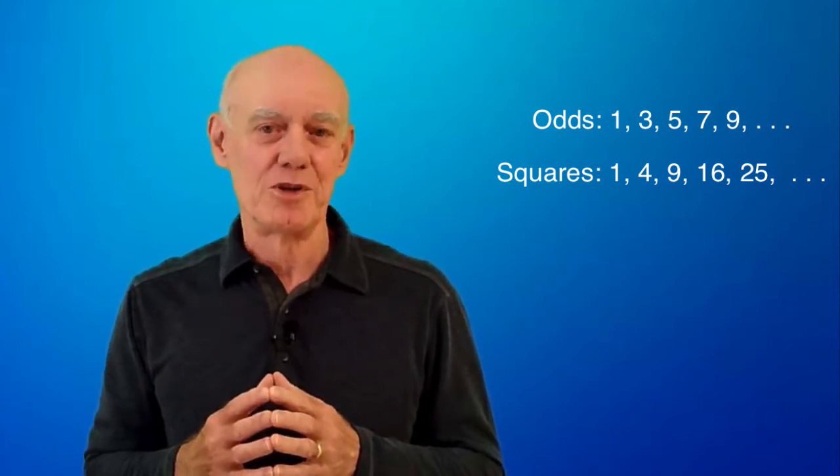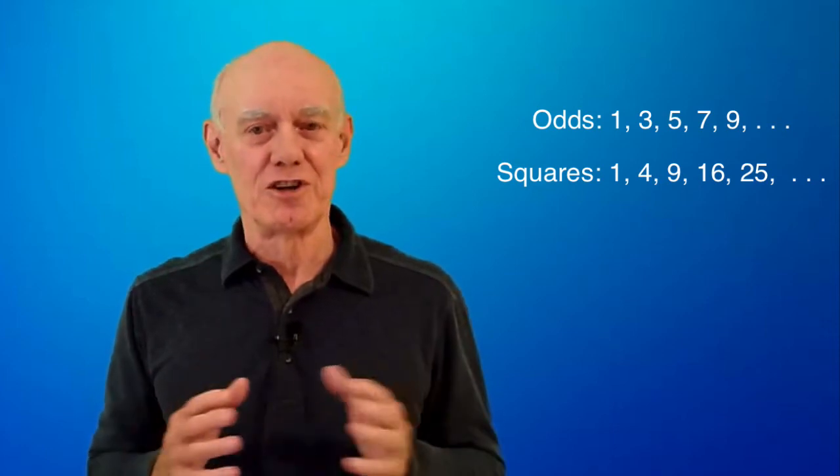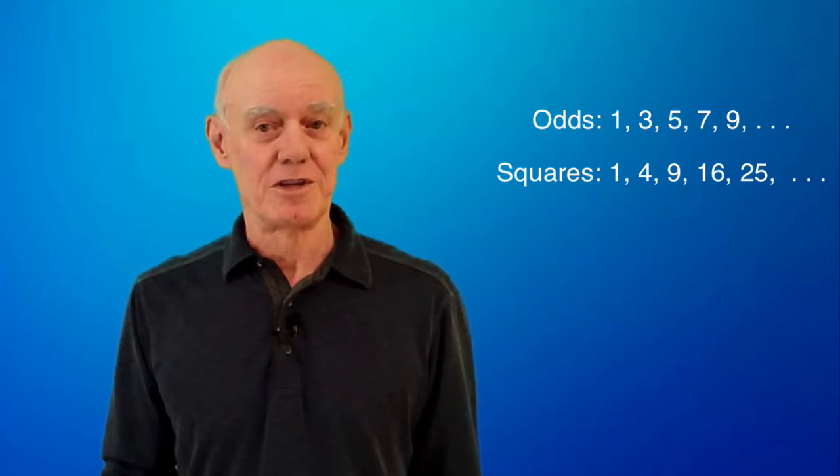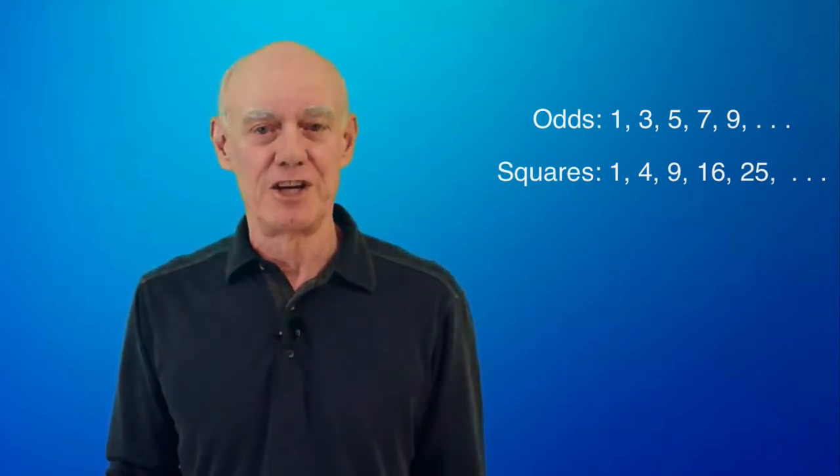Now, there's a relationship between the sequence of odd numbers and the sequence of squares that I really like. To find the relationship, ask yourself, how can I build the sequence of squares from the sequence of odd numbers? If you want to try to find that relationship yourself, pause the video now.